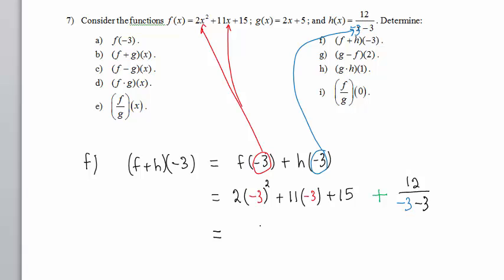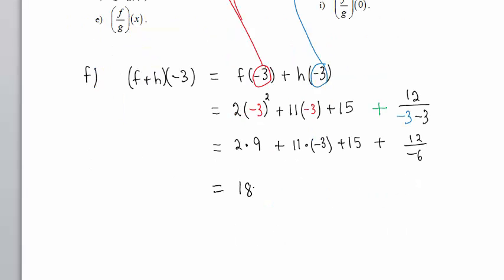Order of operations, negative 3 squared is 9. So we have 2 times 9, plus 11 times negative 3, plus 15, plus 12 divided by negative 6. This is 18, plus negative 33, plus 15, plus negative 2.